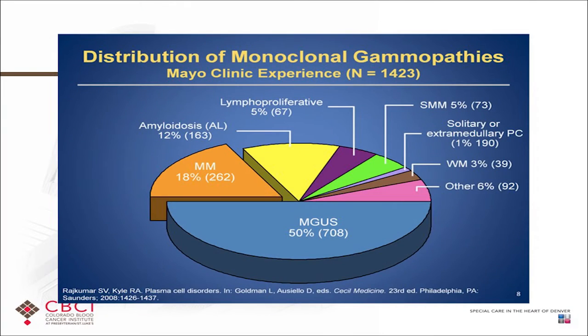When the Mayo Clinic did an evaluation — with some referral bias — they looked at patients with abnormal protein problems and the distribution of those patients. If you have an elevated protein in the bloodstream, it may not be a problem at all — it may just be MGUS, a precursor to cancer that needs monitoring. At the Mayo Clinic, about 50% of referred patients with abnormal proteins had MGUS, 20% had myeloma, and the rest were other rare blood cancers. Of all the patients with abnormal protein problems, only 3% had WM.